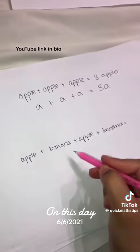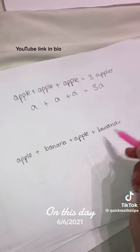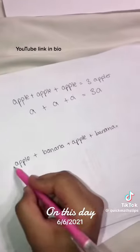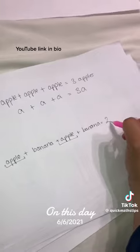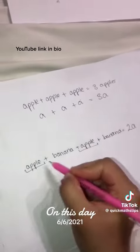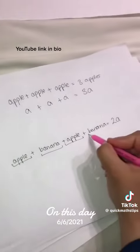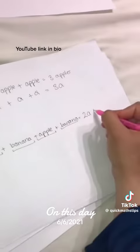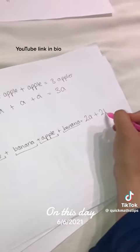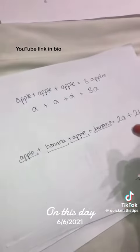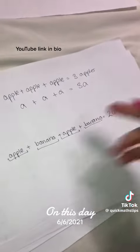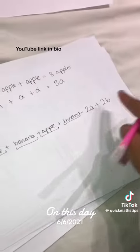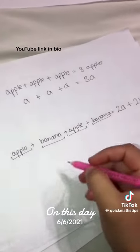If I had apple plus banana plus apple plus banana, I've got 1, 2 apples, so that would give me 2 apples. And I've got 1, 2 bananas, that would give me 2 bananas. My apples and my bananas cannot group together to give me 4 apples-bananas — no, it doesn't work like that. You've got 2 apples, 2 bananas, they don't mix together.